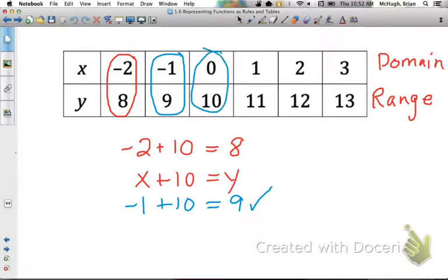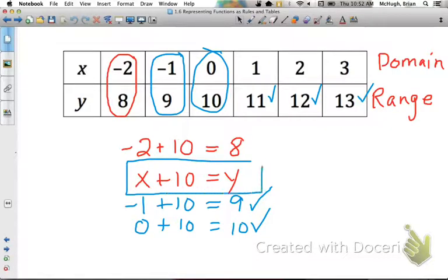We'll try it again with 0 and 10. So 0 plus 10, does that equal 10? Yes, it does. And if we go down the line, 1 plus 10 is 11, so that looks good. 2 plus 10 is 12. 3 plus 10 is 13. And so by looking at each input and the output, I know that the rule I guessed on the first try, x plus 10 equals y, that's the rule for this table of values.